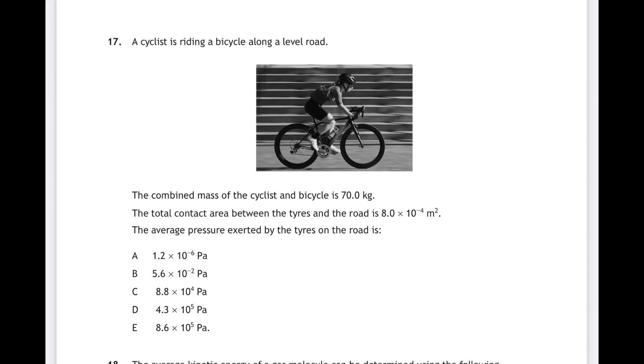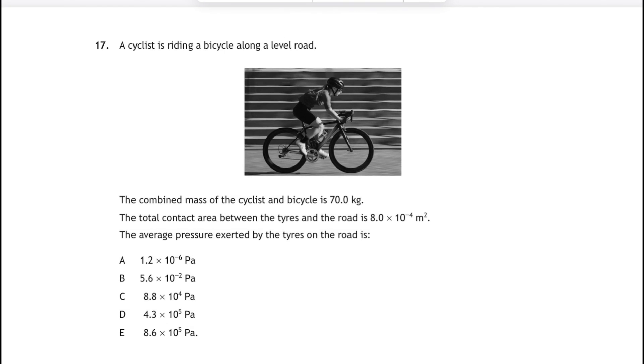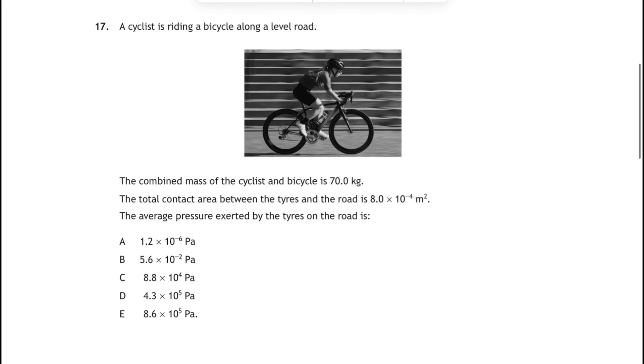A cyclist and his bicycle have got a mass of 70 kg. The area of contact on the ground is 8 times 10 to the minus 4 square meters, and we have to find the average pressure exerted by the tyres on the road. So we go to our relationship sheet, and we're looking for pressure equals force over area, P equals F over A. The force in this case is the weight of the cyclist and his bicycle, that's 70 kg times 9.8 gives us 686 Newtons, and that's quite important.